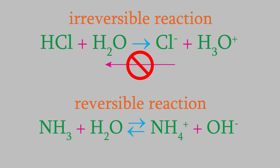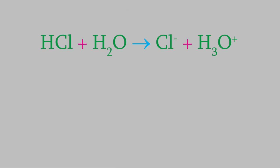On the other hand, in the reversible reaction, some of the products will recombine to give us back some of the reactant molecules. So, all the HCl molecules react to form hydronium and chloride. That makes hydrochloric acid a strong acid.